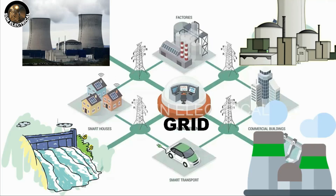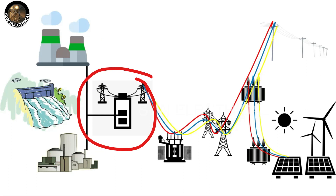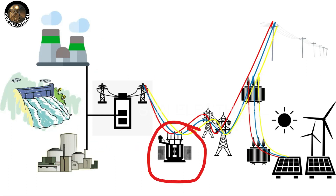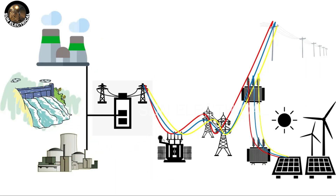All power plants are connected to each other. Here we have thermal, hydro, and nuclear power plants. The grid is connected to the transformer, and the transformer and transmission line carry power to the consumer.